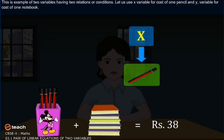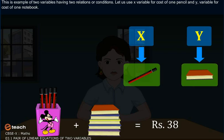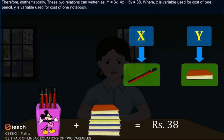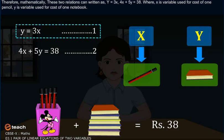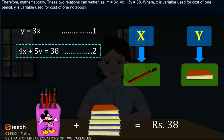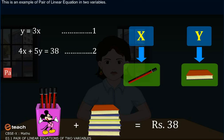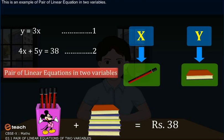Let us use x variable for cost of one pencil and y variable for cost of one notebook. Therefore, mathematically, these two relations can be written as y is equal to 3x, and 4x plus 5y is equal to 38, where x is variable used for cost of one pencil, y is variable used for cost of one notebook. This is an example of pair of linear equations in two variables.